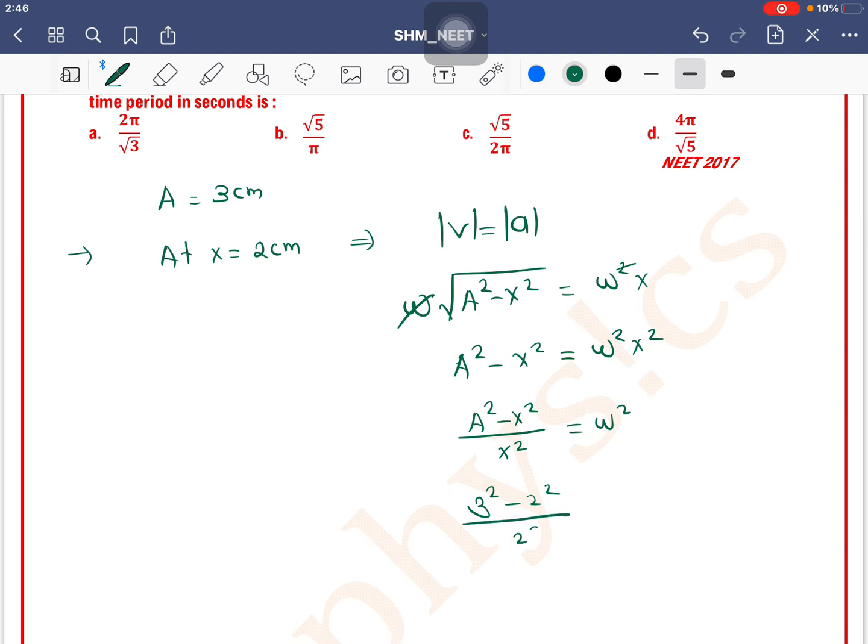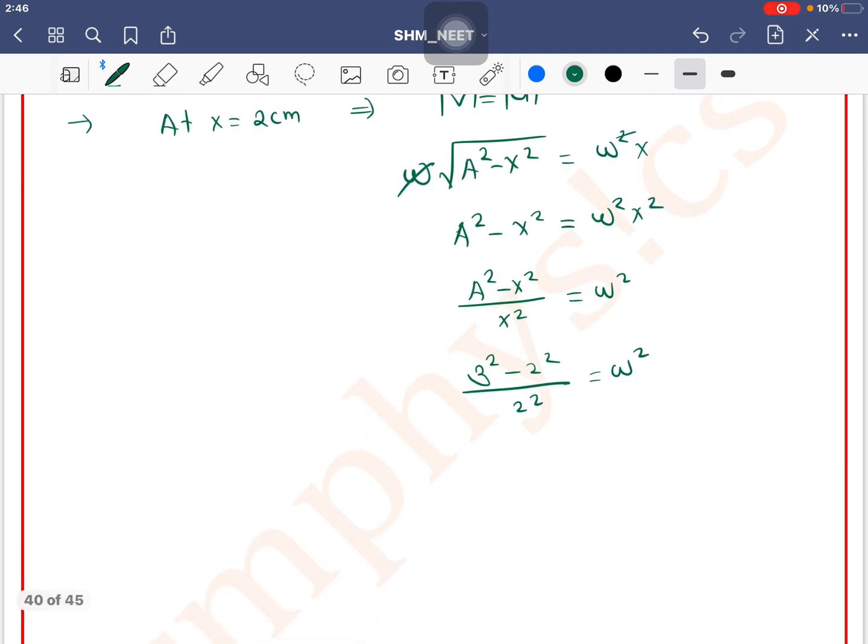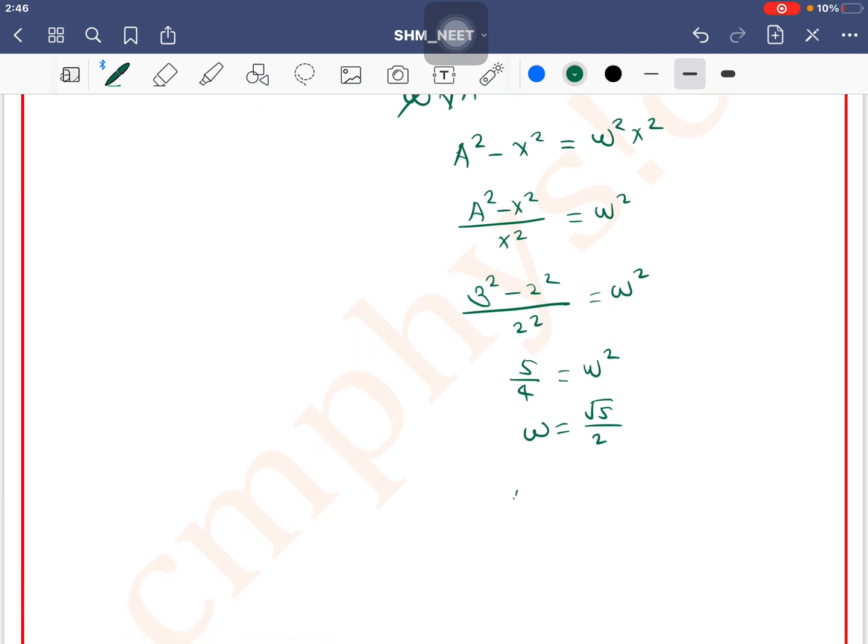So (9-4)/4 equals 5/4 equals ω². Therefore ω equals √(5/2), which is √5/2. The time period T equals 2π/ω.